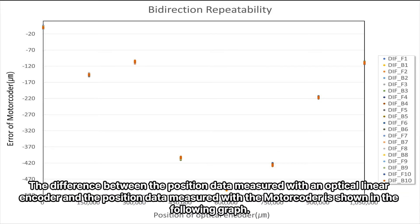The difference between the position data measured with an optical linear encoder and the position data measured with the motor coder is shown in the following graph.